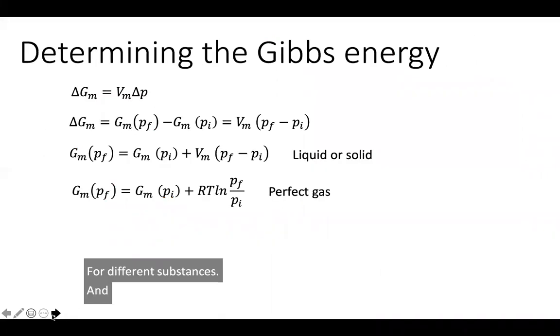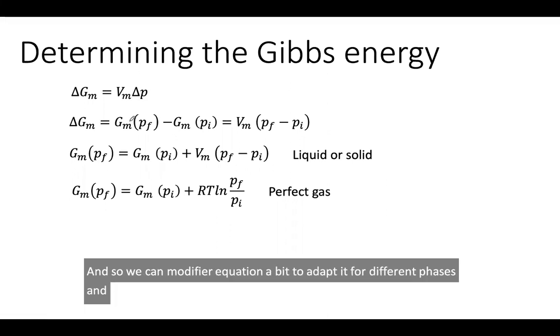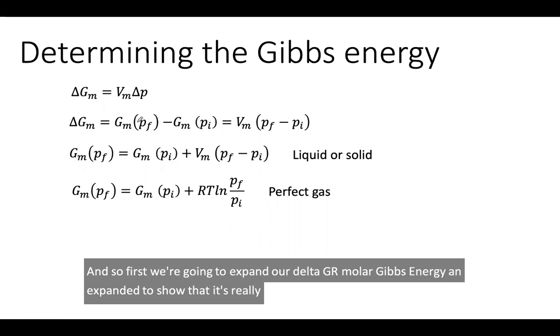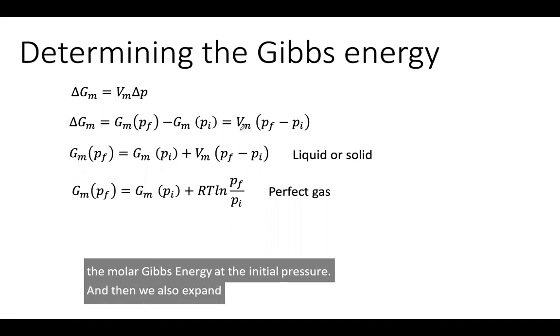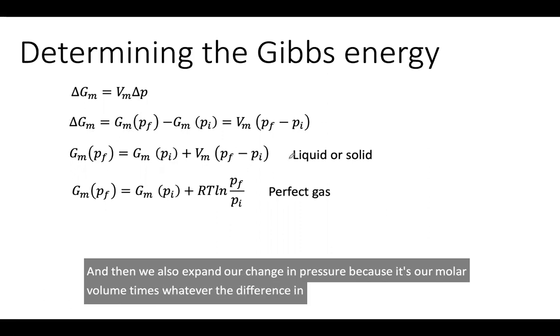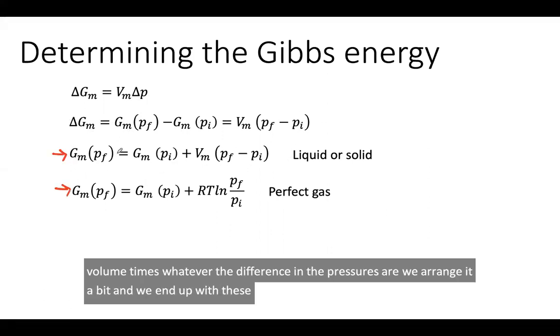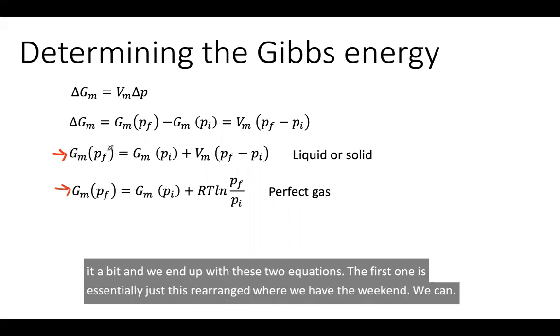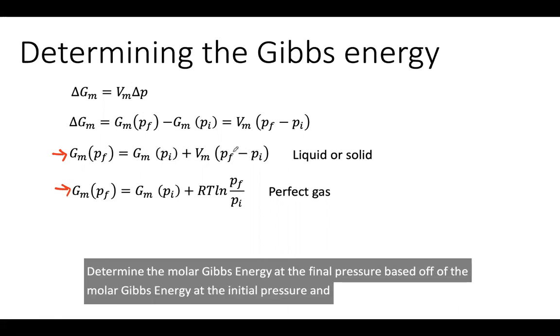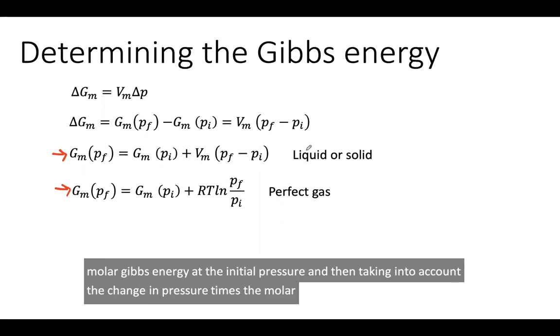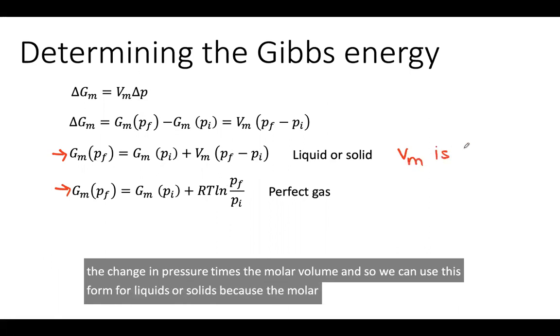We can modify our equation a bit to adapt it for different phases. We're going to expand our molar Gibbs energy to show that it's really the molar Gibbs energy of the final pressure, looking at the difference between the final pressure versus the molar Gibbs energy at the initial pressure. We also expand our change in pressure because it's our molar volume times the difference in the pressures. We arrange it and end up with these two equations. We can determine the molar Gibbs energy at the final pressure based off of the initial pressure, taking into account the change in pressure times the molar volume. We can use this form for liquids or solids because the molar volume is smaller.